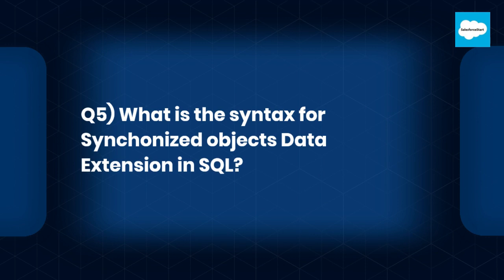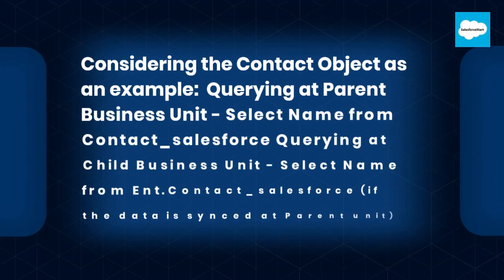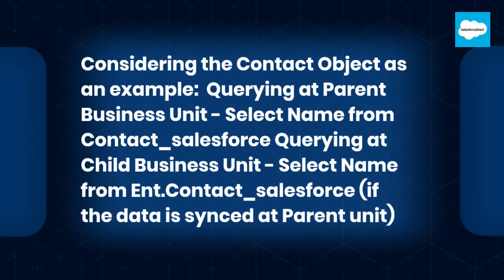Q5 – What is the syntax for Synchronized Objects Data Extension in SQL? Considering the contact object as an example: when querying a parent business unit, use — SELECT Name FROM Contact_Salesforce. When querying at a child business unit, use — SELECT Name FROM ENT.Contact_Salesforce, if the data is synced at the parent unit.